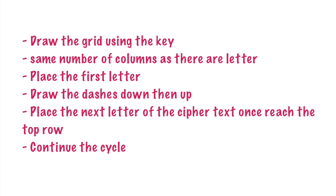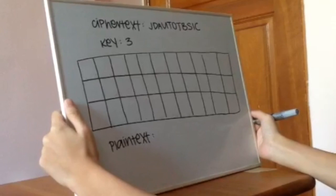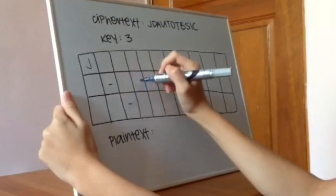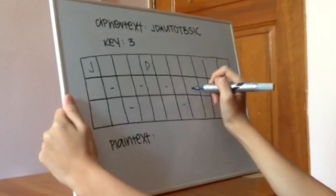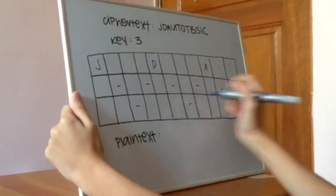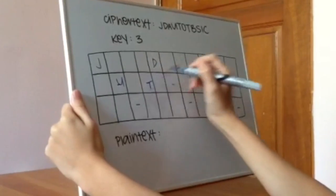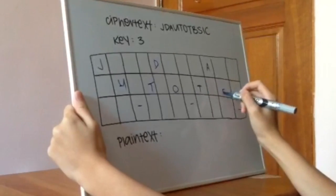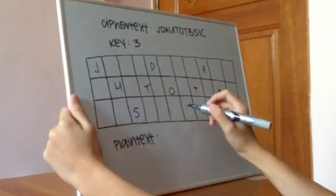After reaching the bottom row, you continue by placing dashes diagonally upwards, and when the top row is reached, you place the next letter of the ciphertext. Continue till the end of the row is reached before starting on the next row. For this example, the ciphertext is encrypted with a key of 3. You start by placing the letter J in the first square. Then, you place dashes diagonally downwards and then diagonally upwards to the right. After you reach the top row, you place the next letter which is D in the square. Continue doing this until the top row is completed, and every column is contributed by either a letter or a dash.